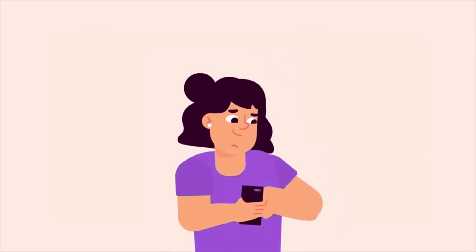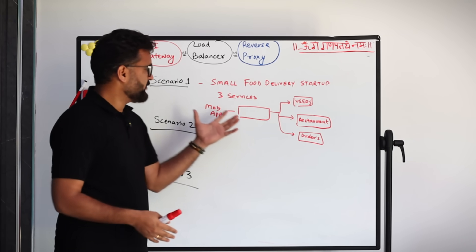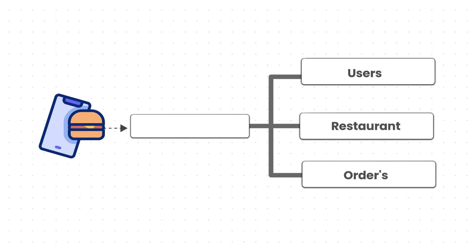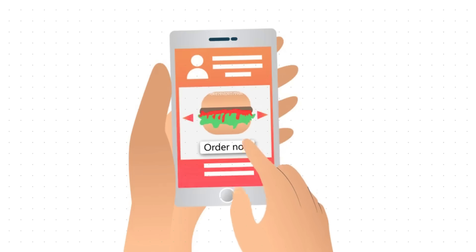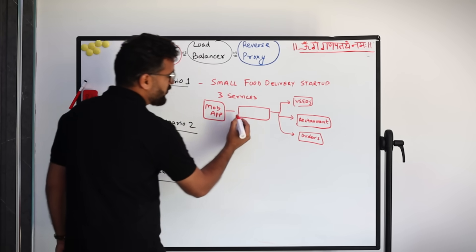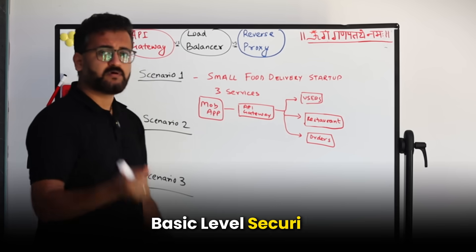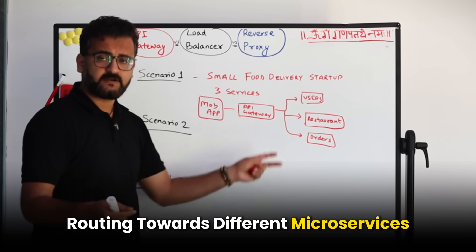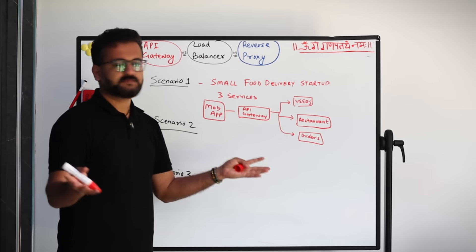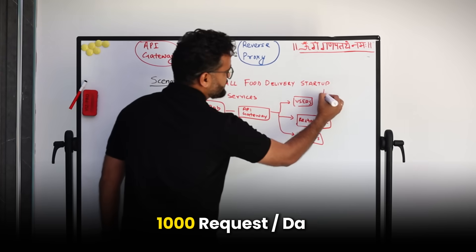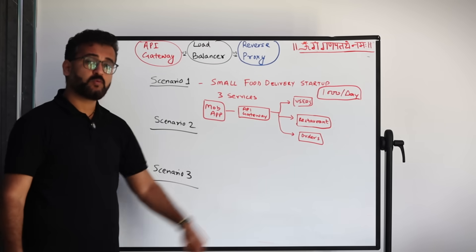Scenario one: a new small food delivery startup trying to serve customers. It has only three microservices — users, restaurants, and orders. Users place orders via a mobile app in a local area. Do they need all three components? No. They can easily handle everything using only an API gateway, which provides basic security, routing to different microservices, and basic load balancing — without making the system complex for just a few thousand requests per day.